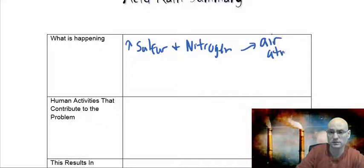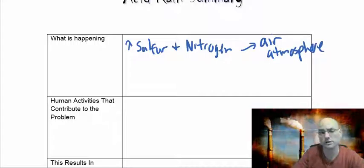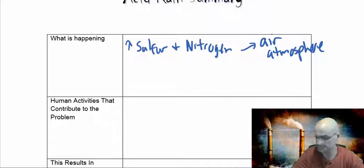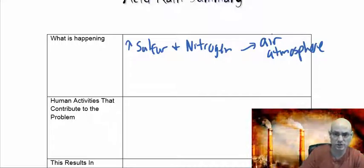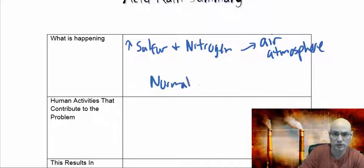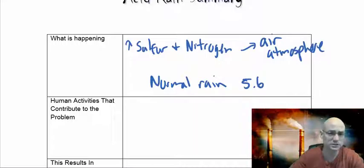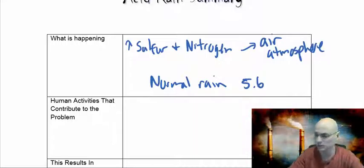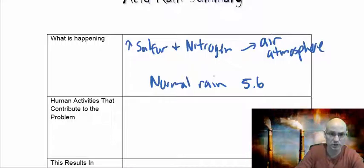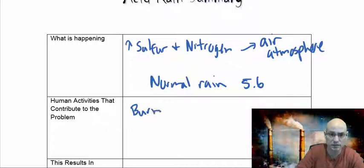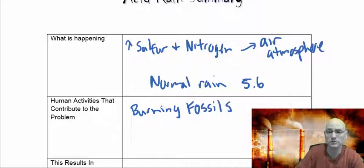What happens is we have an increase in sulfur and nitrogen compounds released into the atmosphere. That mixes with the rainwater, and the rainwater and the nitrogen and sulfur substances will then produce acid rain. Interesting to note is that normal rain is about 5.6, which is slightly acidic. So anything below that we're really talking about acid rain.